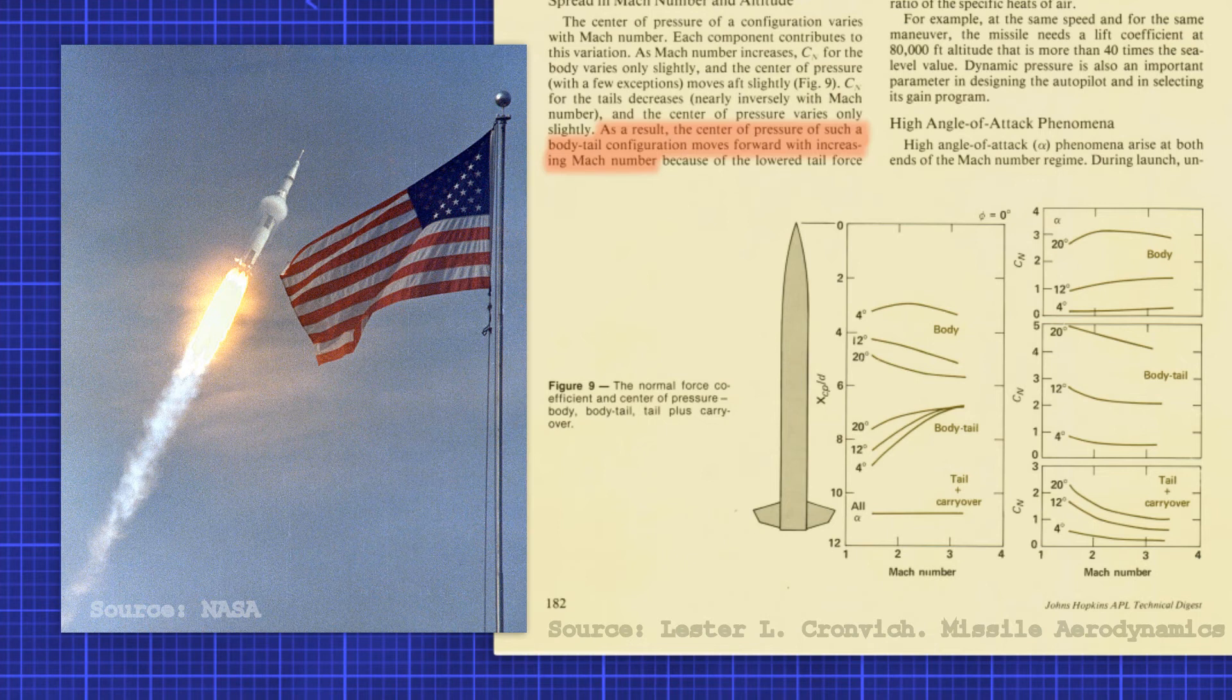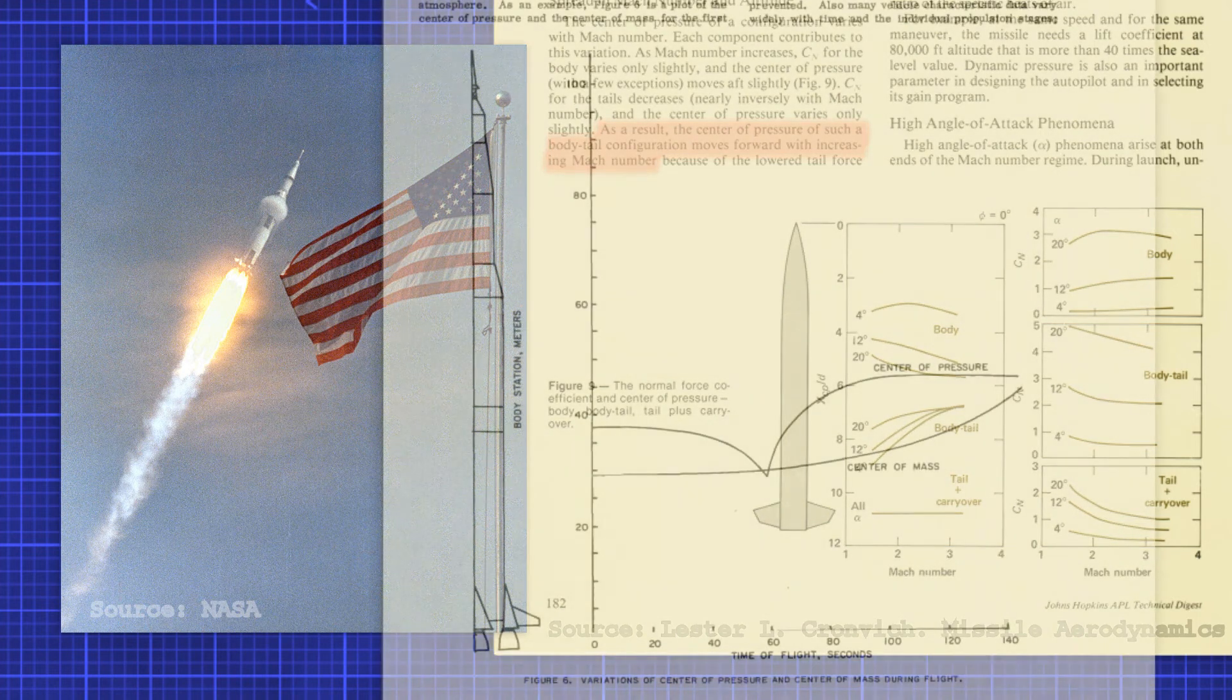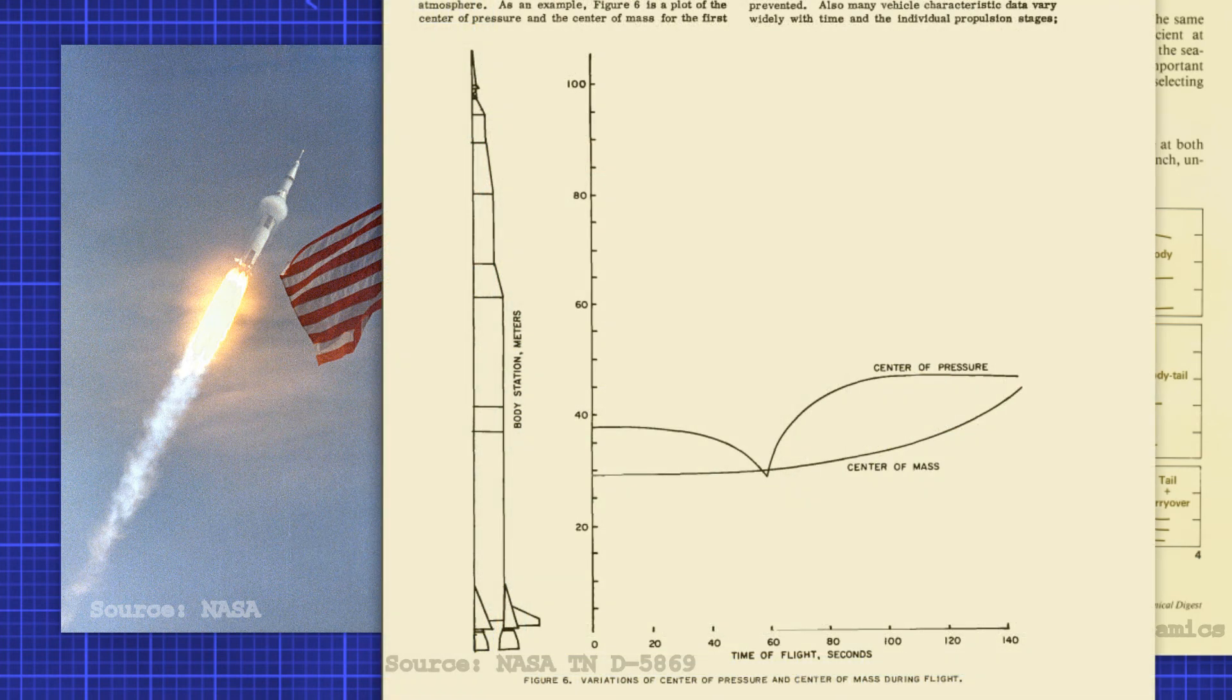So now onto the fun part of going back to the footage shown at the beginning and applying what we have learnt. From this graph, we can see the location of the center of mass and center of pressure during the initial stage of a Saturn V launch.